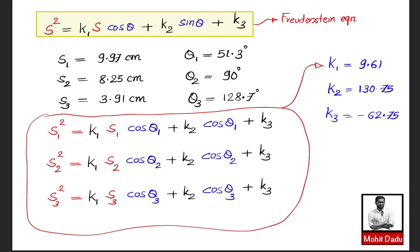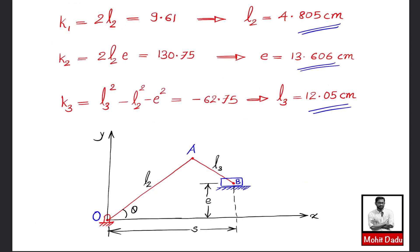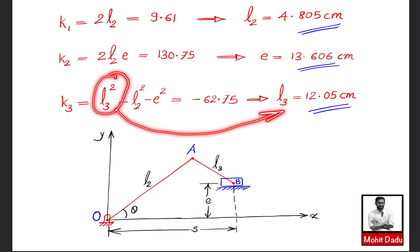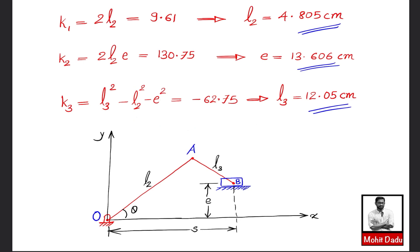Using the definitions of k1, k2, and k3 to recover the link dimensions: since k1 = 2l2 = 9.61, we get l2 = 4.805 cm. Since k2 = 2l2·e = 130.75, the eccentricity e = 13.606 cm. From k3 = l3² − l2² − e², we obtain the connecting rod length l3 = 12.05 cm. This completes the synthesis of the offset slider crank mechanism using the analytical method with the Freudenstein equation.